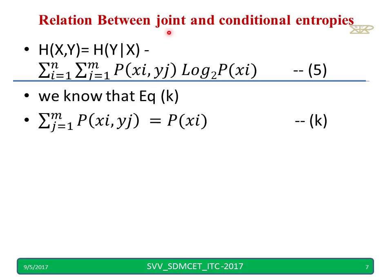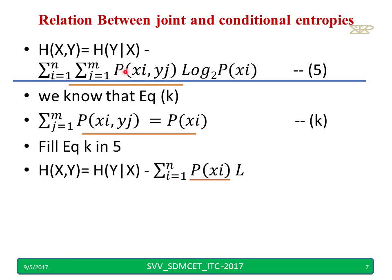This is from the previous slide. We know that from equation number k, probability of (xi, yj) equals probability of xi when I take summation j equals 1 to m. When I fill it, I will get this: I am writing equal to P(xi). Simply here I have kept probability of xi.